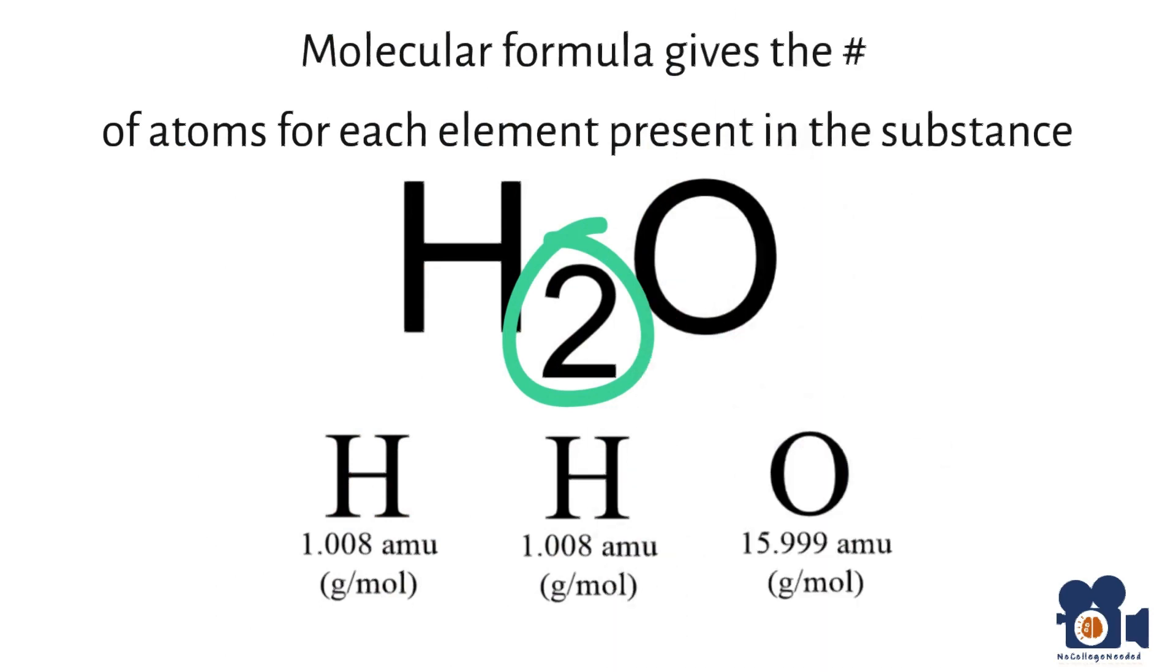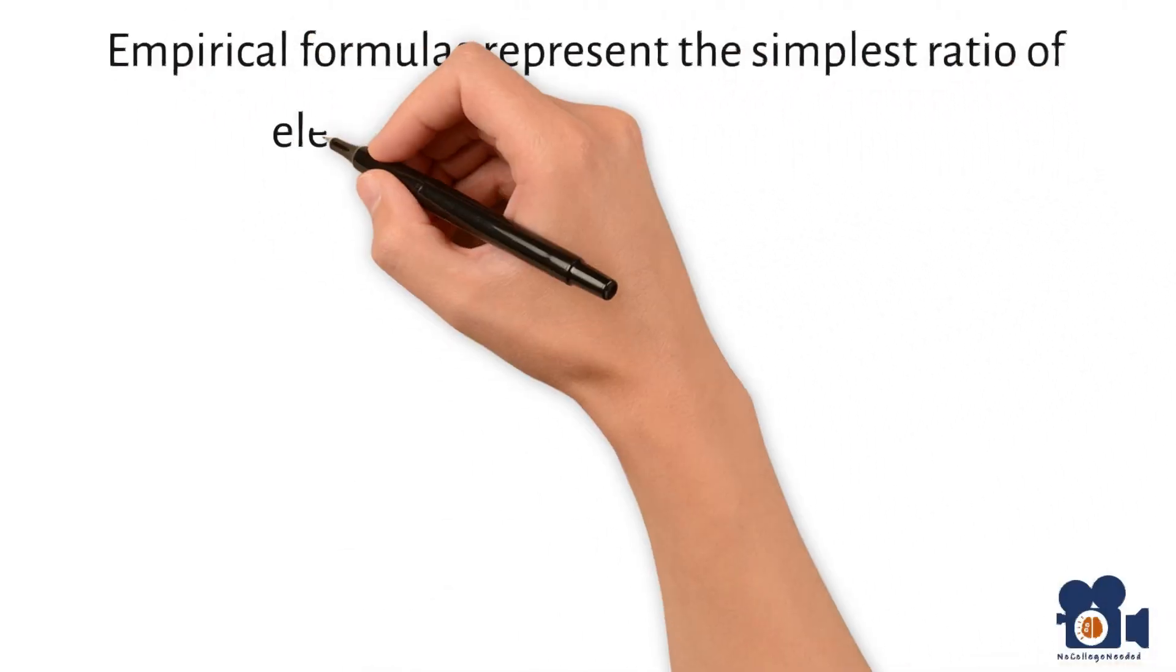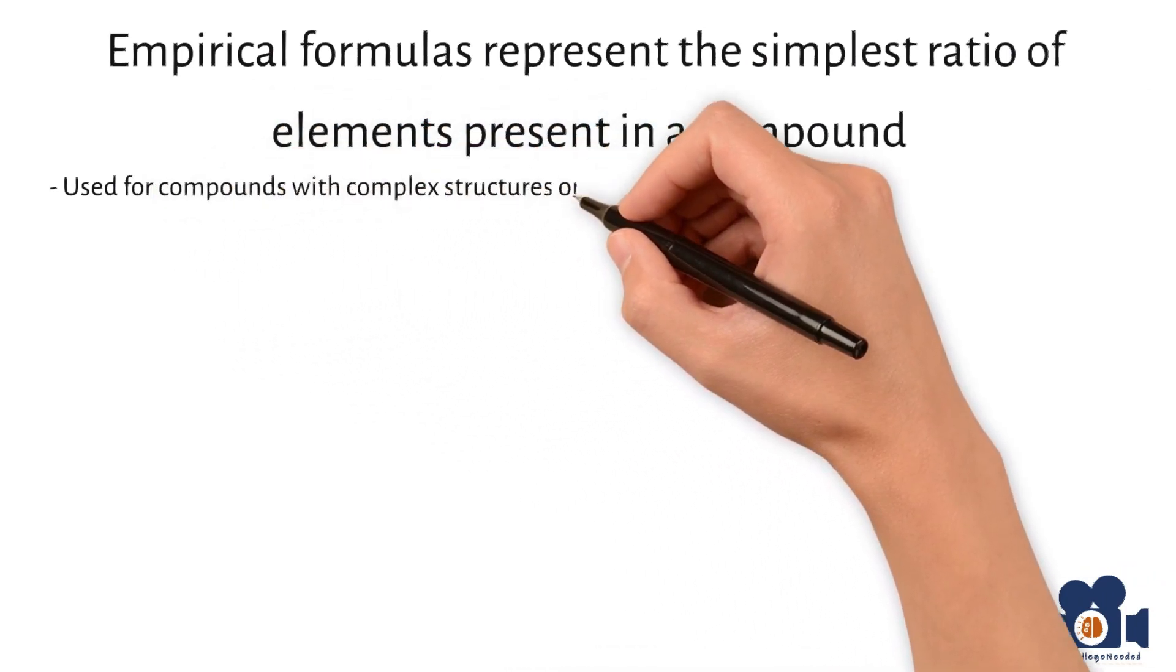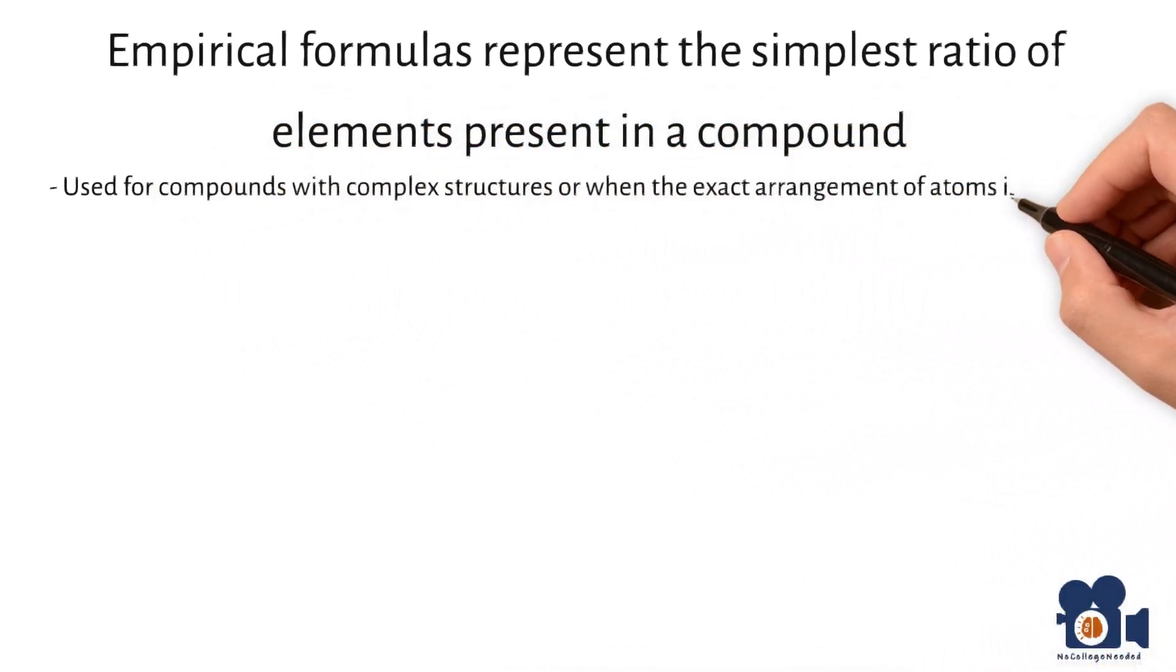In the case of water, H2O is the molecular formula as well as the empirical formula. Empirical formulas represent the simplest ratio of elements present in a compound and are commonly used for compounds with complex structures or when the exact arrangement of atoms is unknown. It does not provide the actual number of atoms, but rather shows the relative proportions.